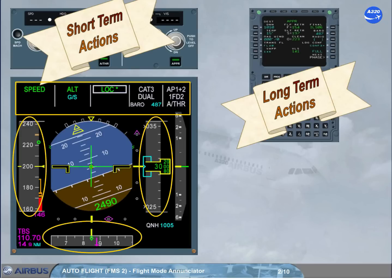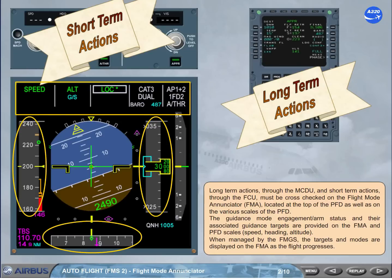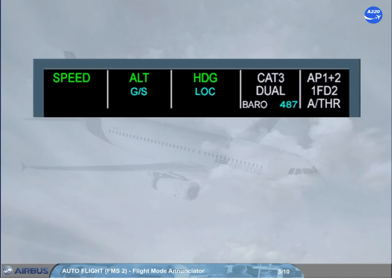When managed by the FMGS, the targets and modes are displayed on the FMA as the flight progresses. Let's discuss the FMA in more detail.